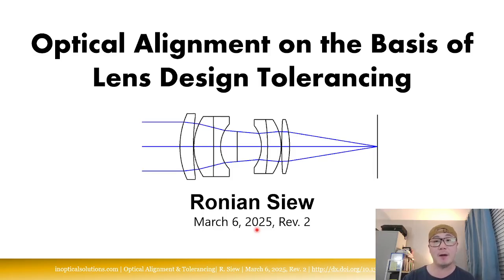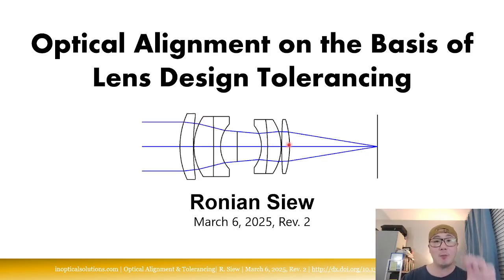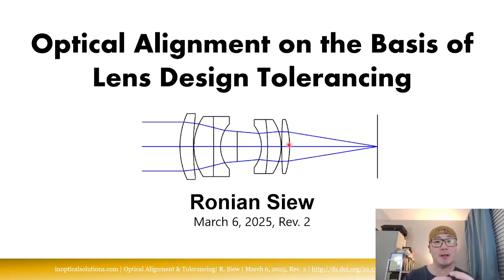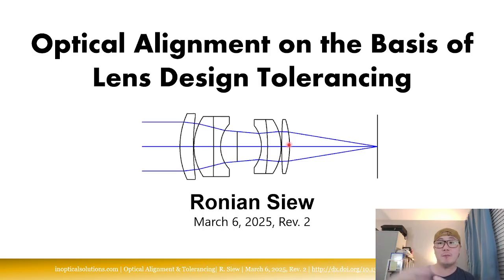To be clear, this is not going to be about how to align one element relative to the next. I'm talking about a fully assembled imaging lens comprising many elements that have already been assembled in a factory and you bought it off the shelf, and now you want to align this assembly relative to another assembly or relative to an image plane where an image sensor resides.